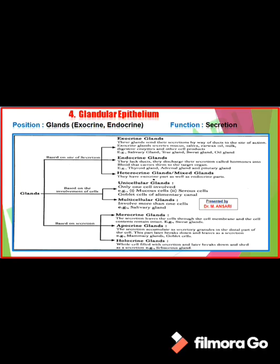Pancreas is taken as a heterocrine gland because it performs the function of both exocrine and endocrine gland. Pancreatic juice, given by the pancreas, helps in digestion of food. It also secretes hormones like insulin and glucagon, which help in maintaining or balancing blood sugar level.